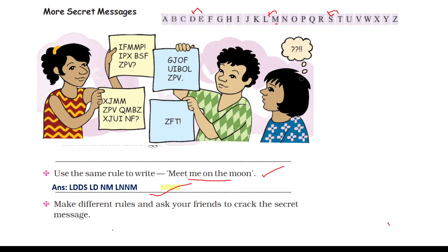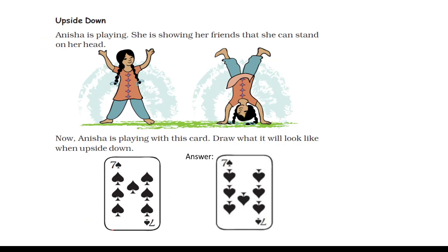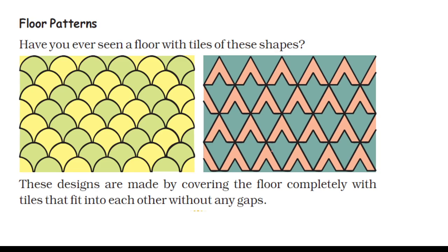Now make different rules and ask your friends to crack the secret messages — you have to do this yourself. Moving to the next page: Anisha is playing and showing her friends that she can stand on her head. This time Anisha is upside up, and this time she is upside down. You will draw this card in your book.